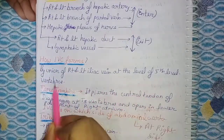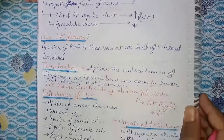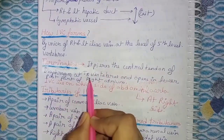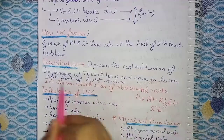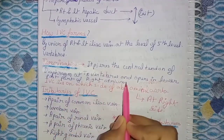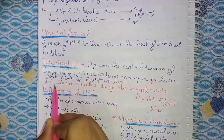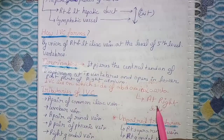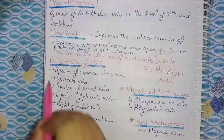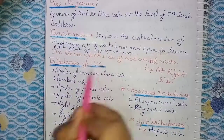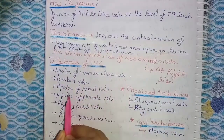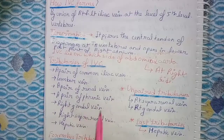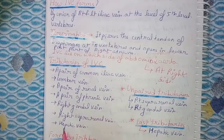The inferior vena cava is formed by the union of the right and left iliac veins at the level of the fifth lumbar vertebra. It pierces the central tendon of the diaphragm at the level of the eighth thoracic vertebra and opens into the lower posterior part of the right atrium. The IVC lies on the right side of the abdominal aorta. Tributaries of the IVC include: a pair of common iliac veins, lumbar veins, a pair of renal veins, a pair of phrenic veins, right gonadal vein, right suprarenal vein, and hepatic veins.